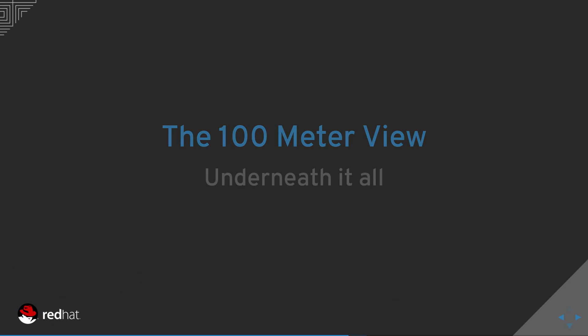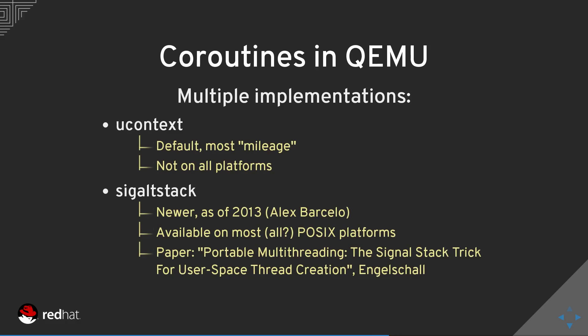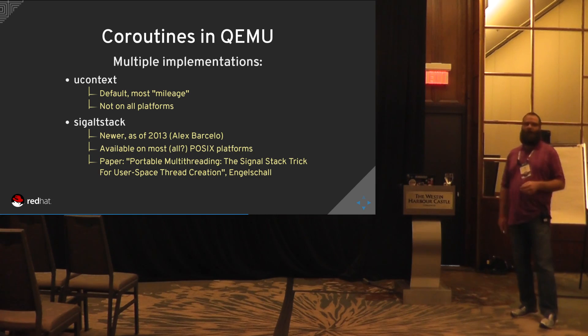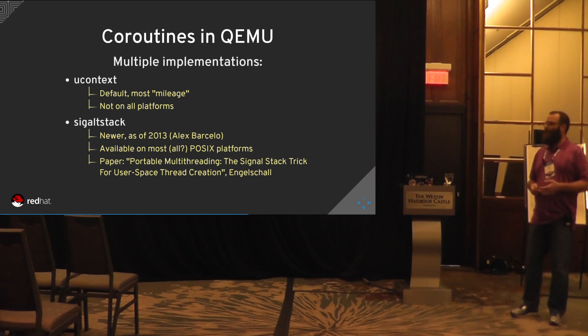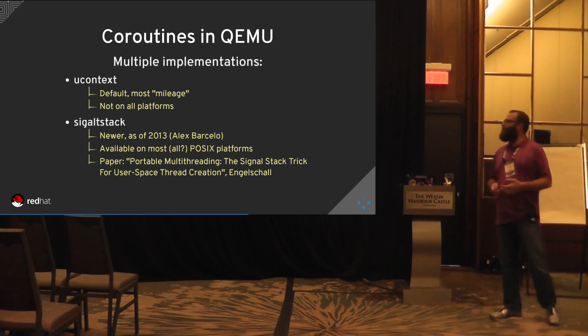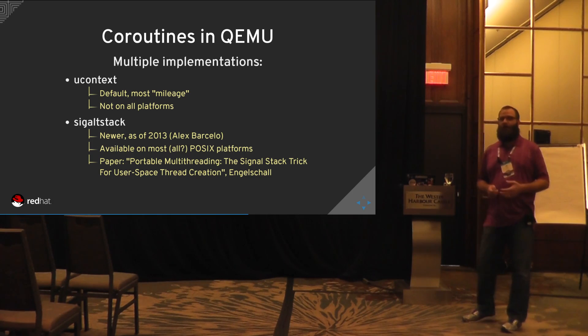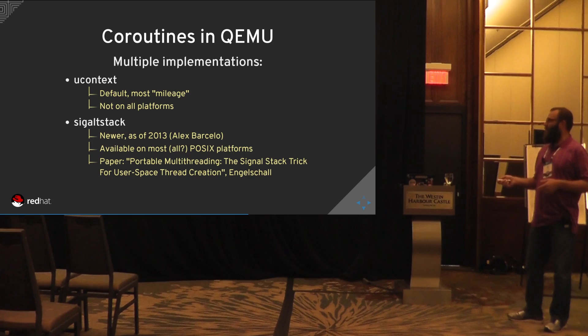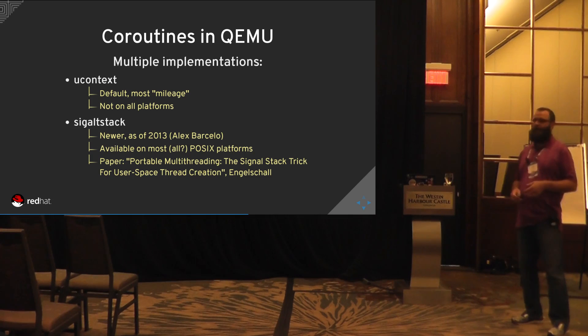QEMU actually has four coroutine implementations. We have uContext, which is the default — it's not available on as many platforms, but it's the preferred method and pretty straightforward. There's also SigAltstack, which is newer and should be available on all POSIX platforms. There's a paper that introduces using SigAltstack for coroutines, which this implementation was derived from via the GNU Portable Threads Library (PTH).